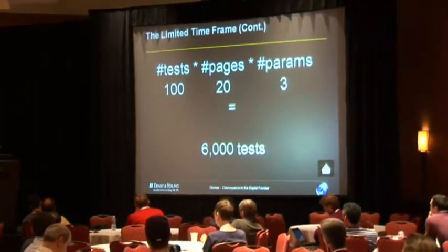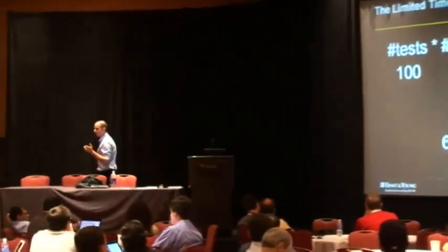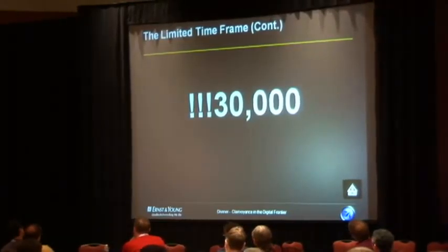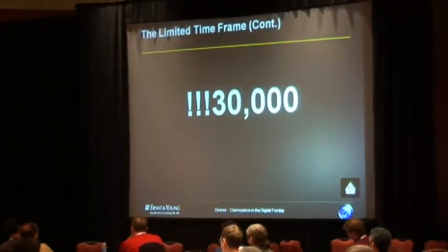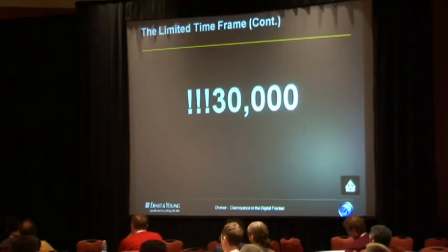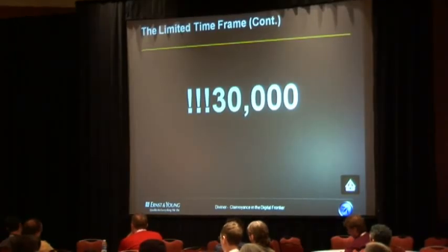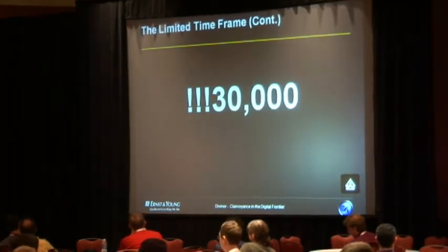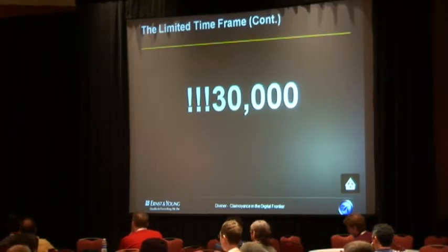6,000 tests is a lot, but if we have a timeframe of one or two weeks, we can probably manage to test most of these vulnerabilities. However, if we're testing a mid-sized or larger application — something around 100 URLs or more — we end up with 30,000 tests. That's not something we can perform in two weeks. In my opinion, we probably can't perform that in two months. So obviously, in real life, penetration testers don't always perform the tests they want to perform manually. They don't have enough time.